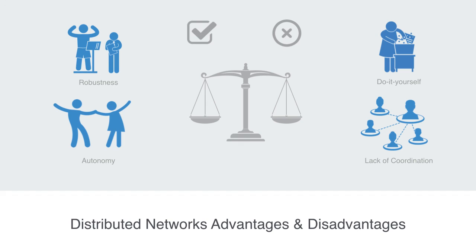This can also create problems in terms of coordinating the network as a whole. In many ways, a distributed network represents a system in a fine balance and relatively stable state, and this is often not what we see when we look at real world networks. In the next module, we'll be turning up our degree distribution parameter to the point where small hubs emerge, in what is called a decentralized network.